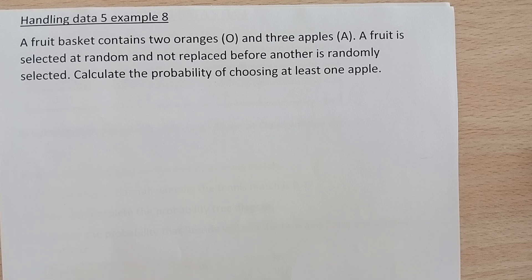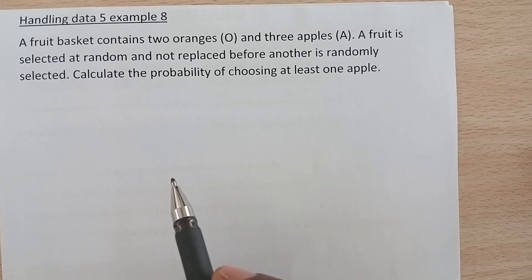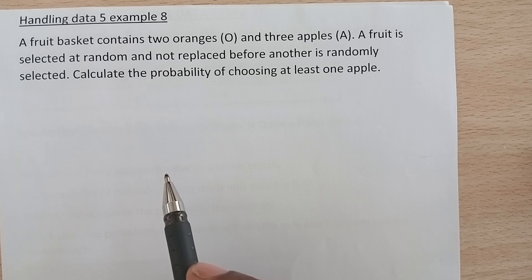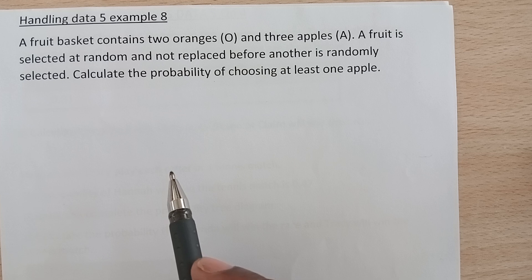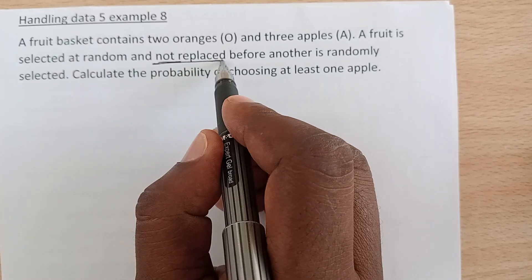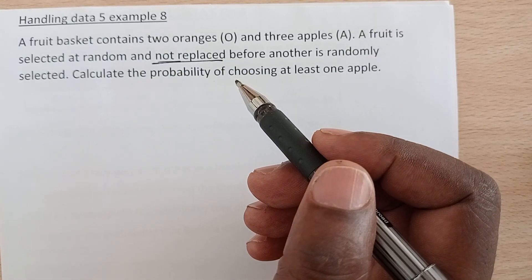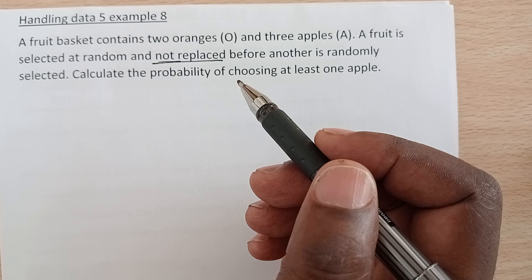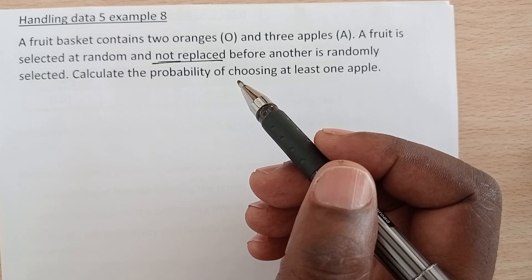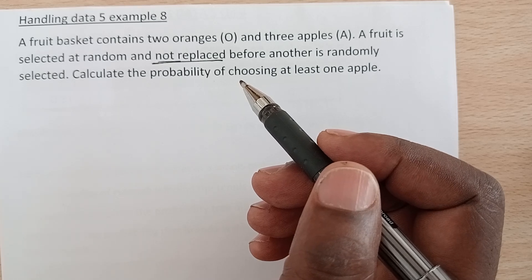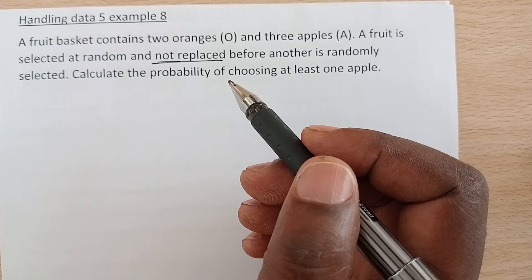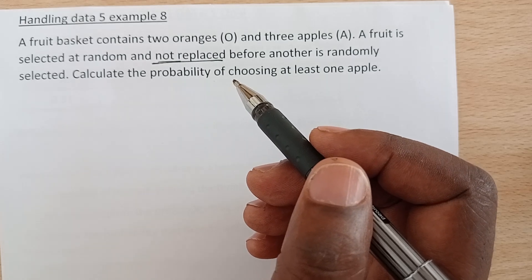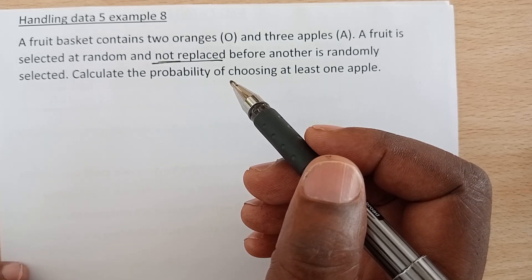We are being told that a fruit basket contains two oranges and three apples. A fruit is selected at random and not replaced — there's a keyword there to underline: not replaced — before another is randomly selected. Calculate the probability of choosing at least one apple.